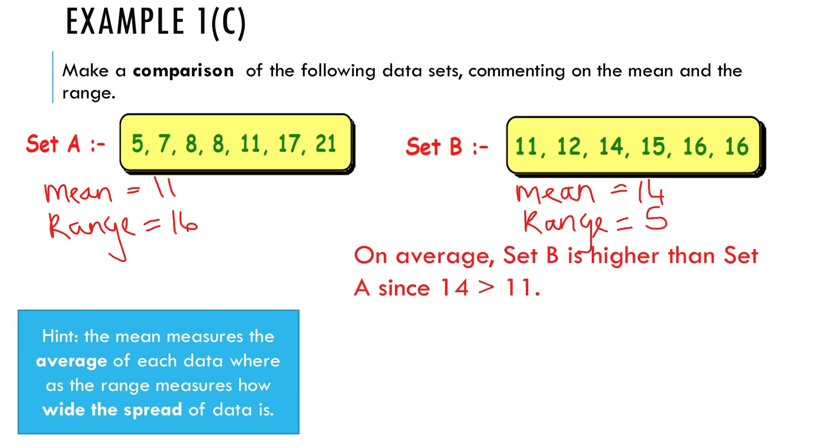For the range now, we can see set A has a much larger range than set B and that's because the spread of numbers is much greater. The numbers are as low as 5 and as high as 21, whereas in set B, all of the numbers are pretty close together, with the minimum being 11 and the maximum being 16. So we can say that set A has much more variation and that the numbers are much more varied, they're much more spread apart and that's all you need to say. The data in set B is less varied than set A since 5 is less than 16.